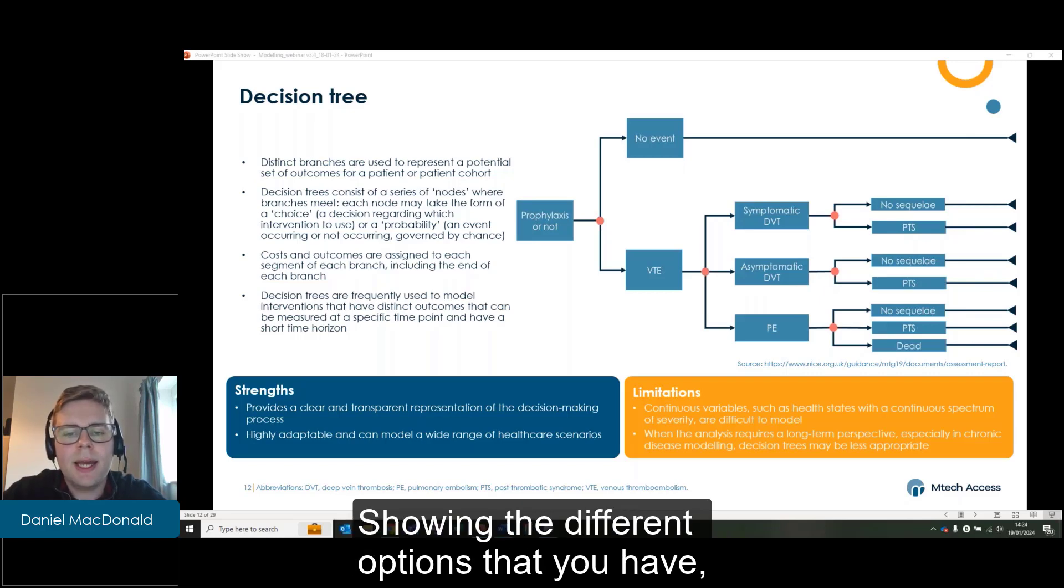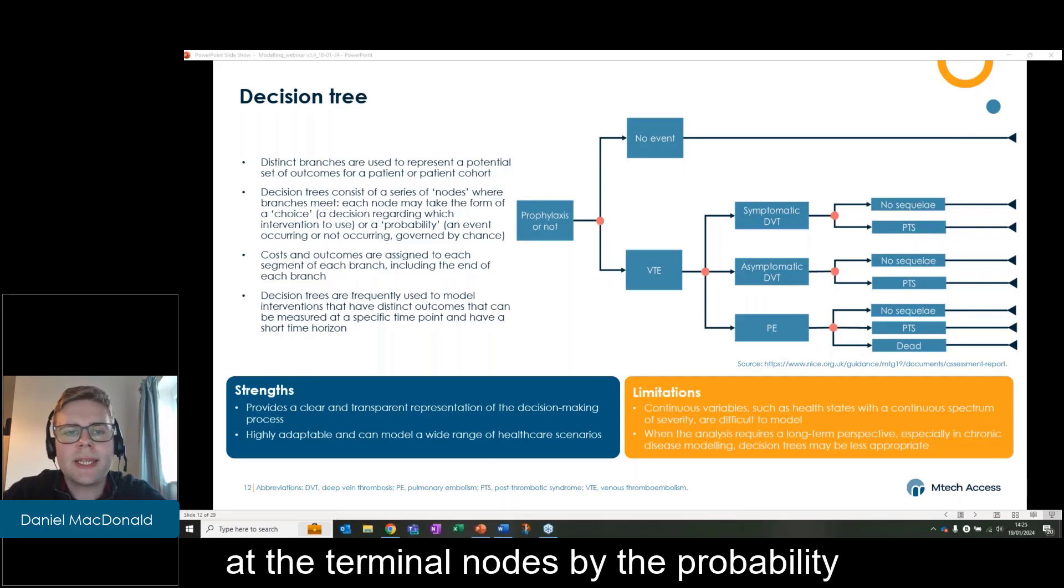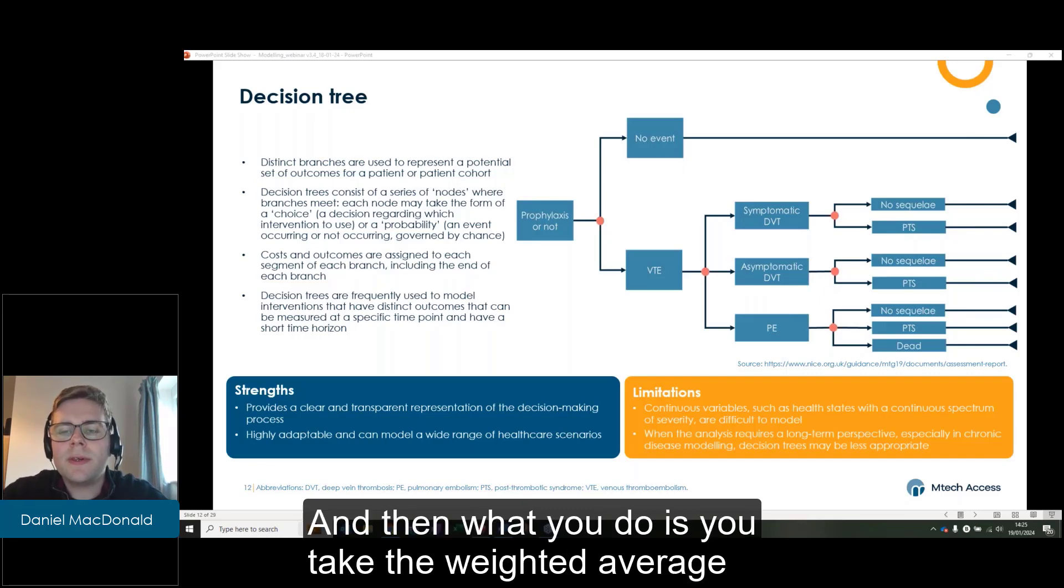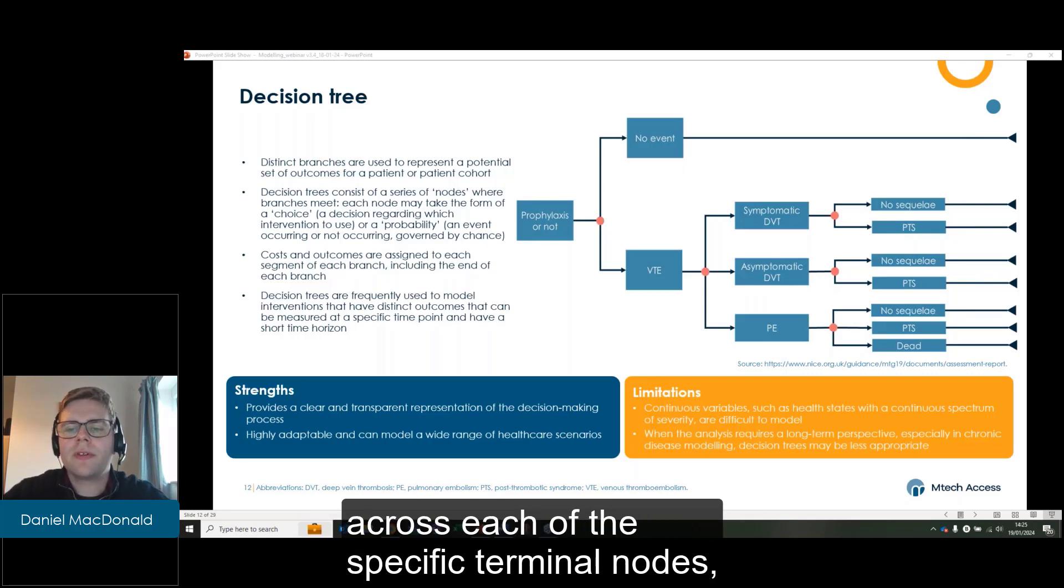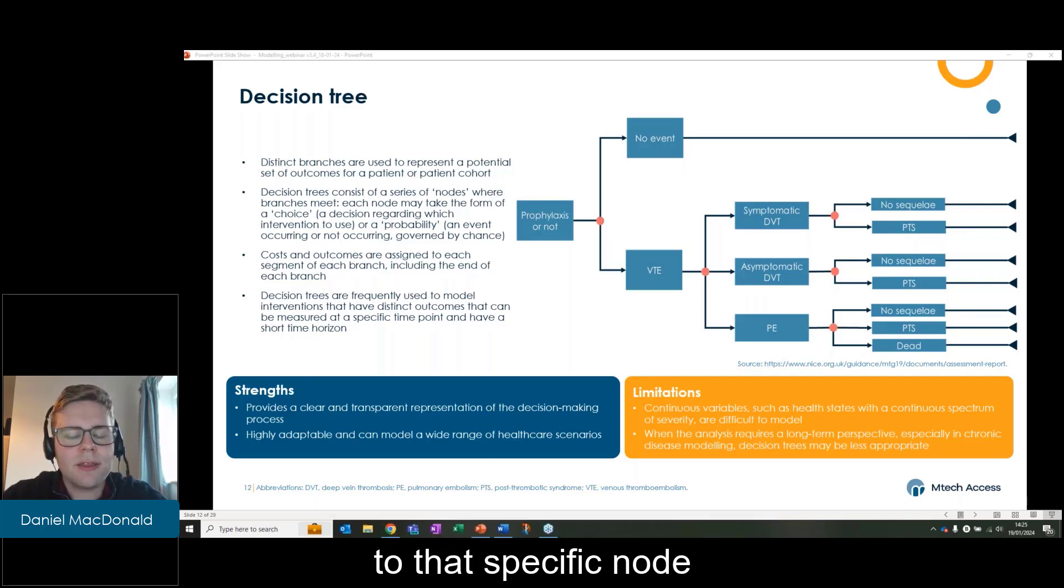The probabilities will sum to one in that instance, showing the different options that you have. You can then weight the QALY and cost outcome at the terminal nodes by the probability of a patient ending up at that specific node. And then what you do is you take the weighted average across each of the specific terminal nodes, weighted by the probability of patients getting to that specific node.